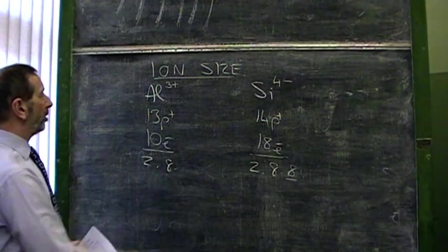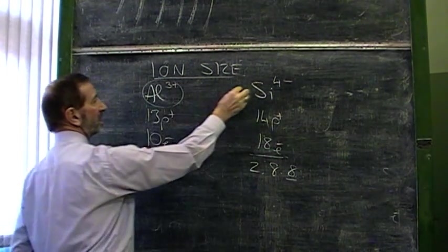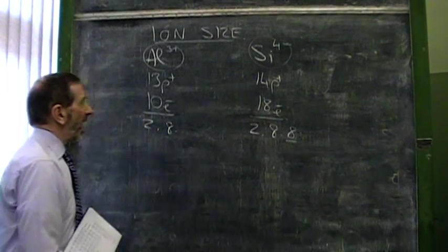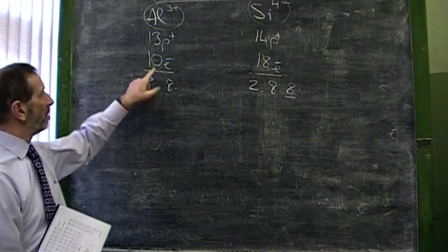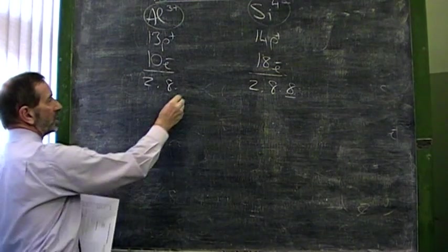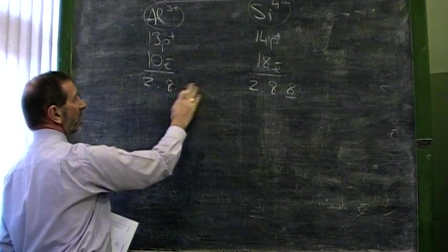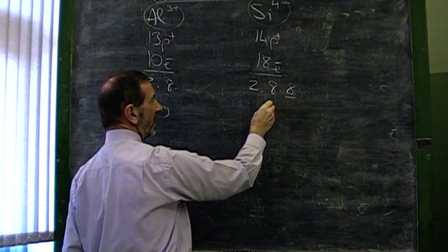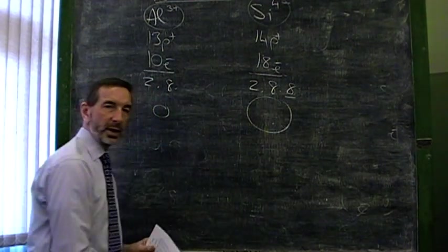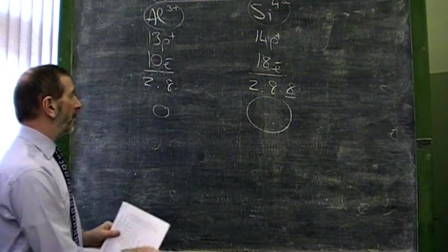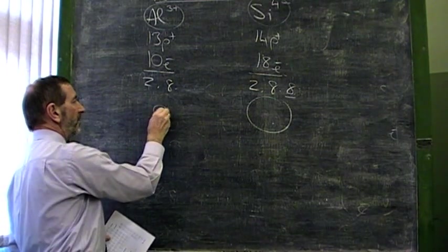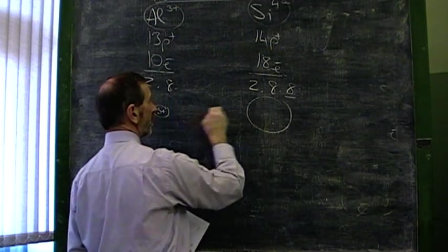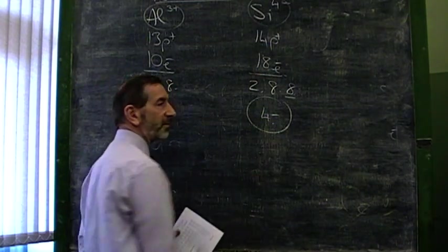Now, although they started out as atoms of similar size, we have ions of vastly different size. The aluminum ion will be much smaller than the atom because it's lost its 3 outer electrons. Whereas this will be bigger because it's gained electrons. So, they're atoms we have at similar sizes, but they're ions of a very different size indeed. This is a 3 plus ion. This is a 4 negative ion.